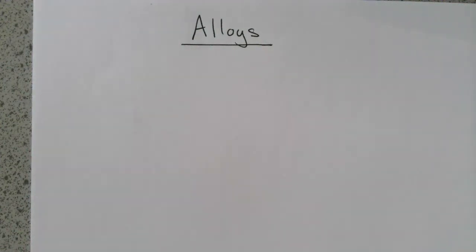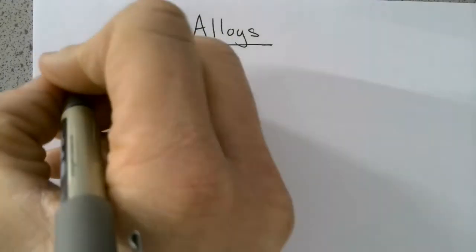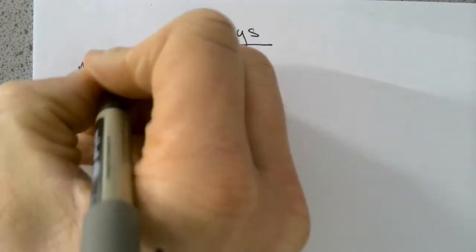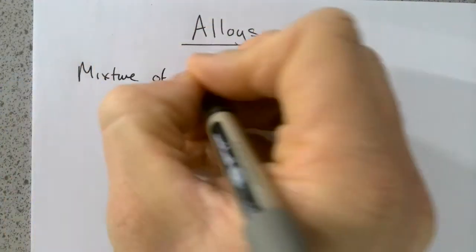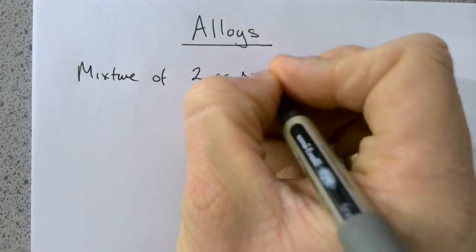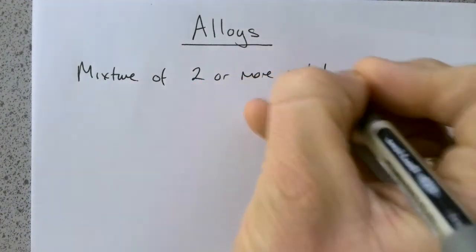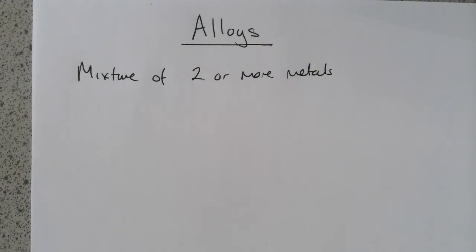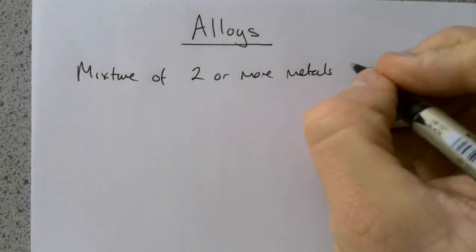We're going to be looking at alloys. Let's define an alloy first of all. An alloy is a mixture of two or more metals. In some cases, it can be a mixture of a metal with a small amount of a non-metal.